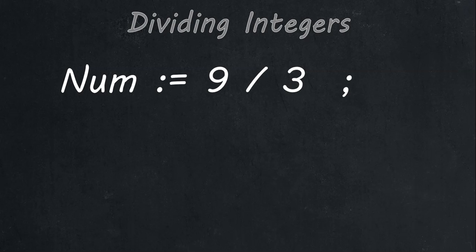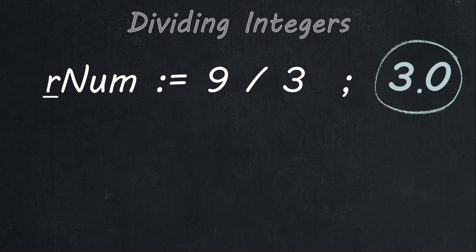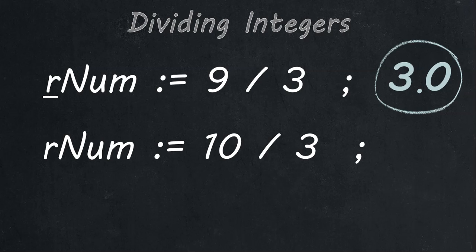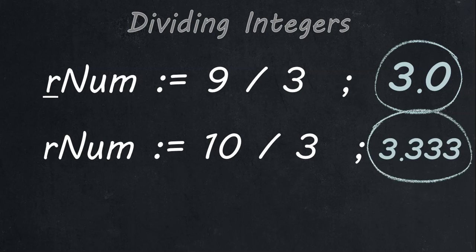Let's start off with a recap from when we did the introduction into learning how to code — we did an example with a calculator. What I told you in that video is the moment you divide two numbers, even if those two numbers are integers, the answer must be a real number. So the answer will be a decimal value. For example, 9 divided by 3 is not just 3, it's 3.0, because you can't always assume division will be perfect. What happens if you say 10 divided by 3? The answer is 3.3 recurring. That's why it's very important that when you divide two numbers, you must store that answer into a real value.